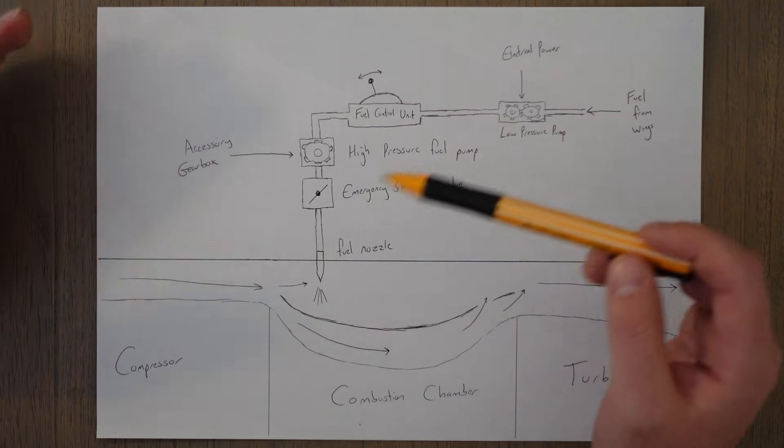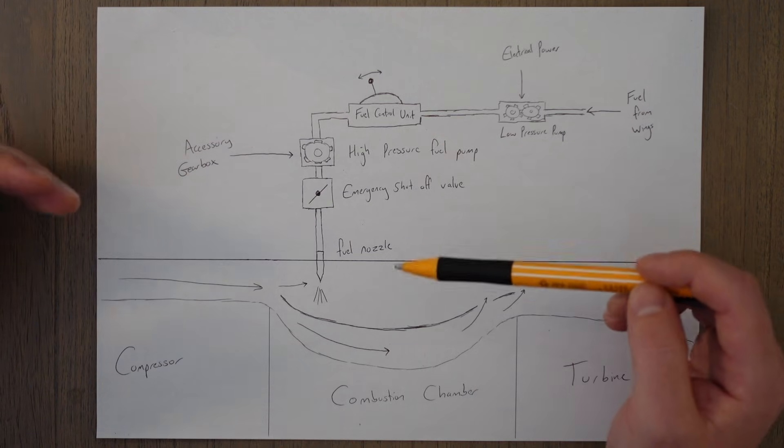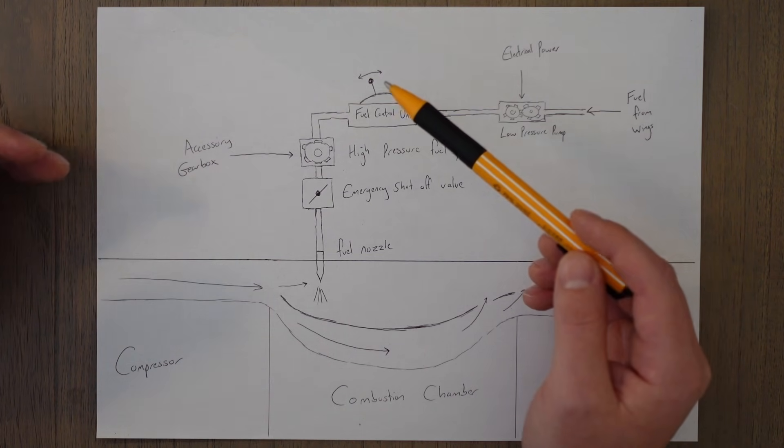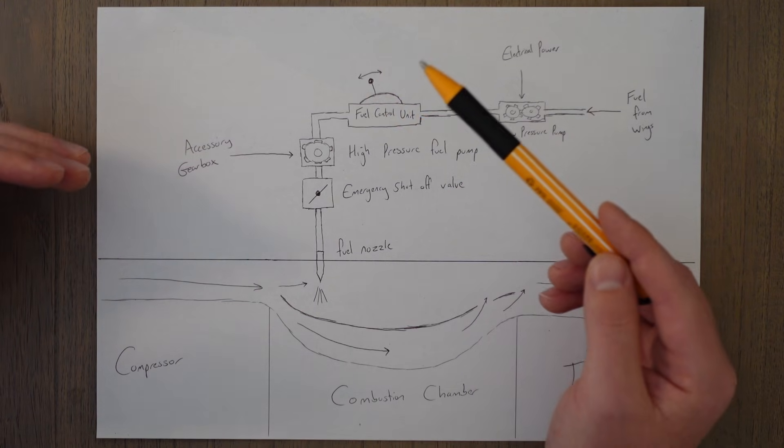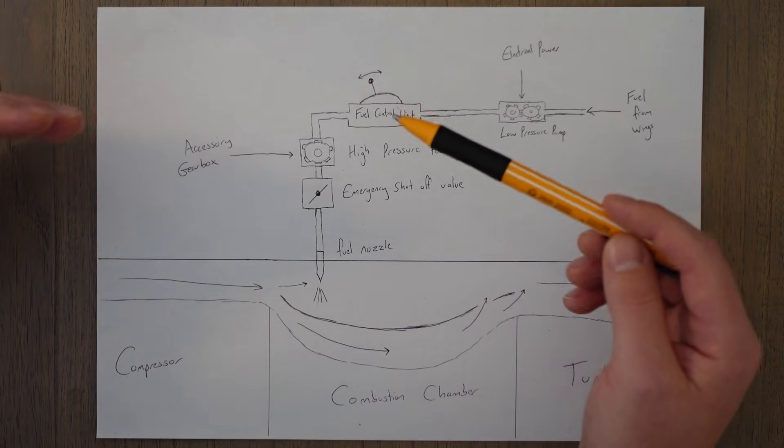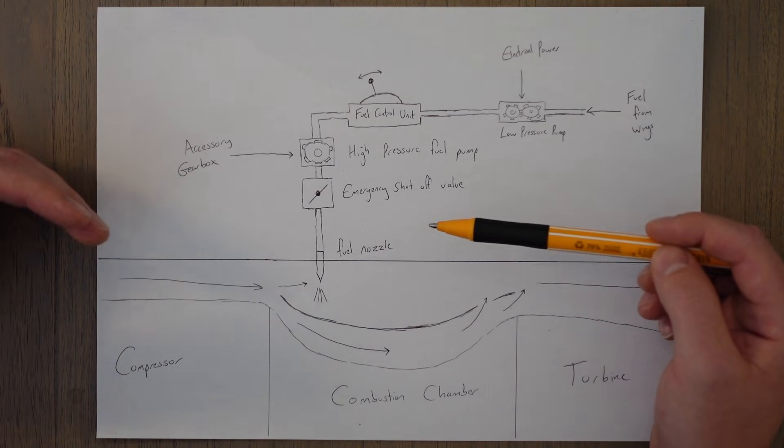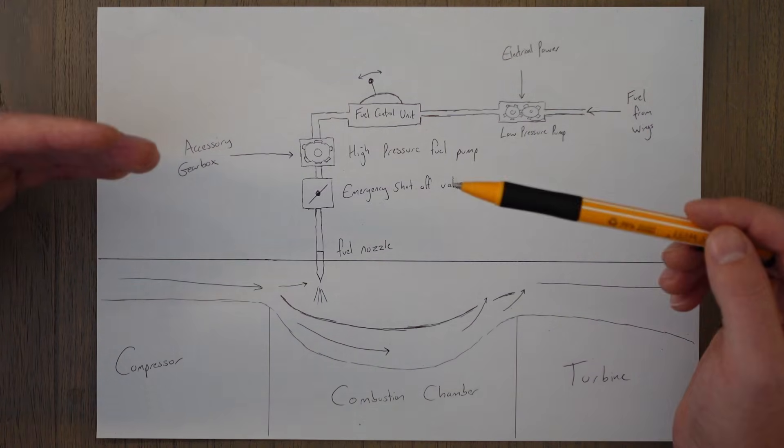The valves and the pumps are pretty self-explanatory, so let's talk about the fuel control unit. Basically, the thrust lever will command more power, and a fuel control unit will decide how much fuel to send to the combustion chamber to achieve an optimum burn and that required power or desired power.